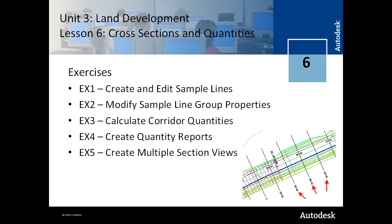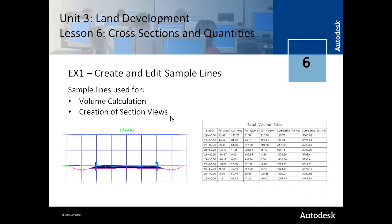Lesson 6 of Unit 3 addresses cross-section creation and quantities. In Exercise 1 you learn how to create and edit sample lines. Sample lines are required for either quantity calculation or cross-section generation. In Exercise 2 you learn about sample line groups, which is the collection of sample lines. In Exercise 3 you learn how to calculate corridor quantities. In Exercise 4 you learn how to create quantity reports. In Exercise 5 you learn how to create section views. The sample line is used to calculate volumes and to create section views.